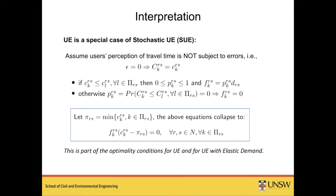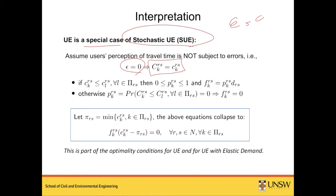If the error term is equal to zero, SUE collapses into UE because UE is actually a special case of SUE. When error equals zero, capital C equals small c, and there is a proof showing how the SUE formulation reduces to the UE optimality conditions. So SUE is a more general framework from which you can recover UE as well.